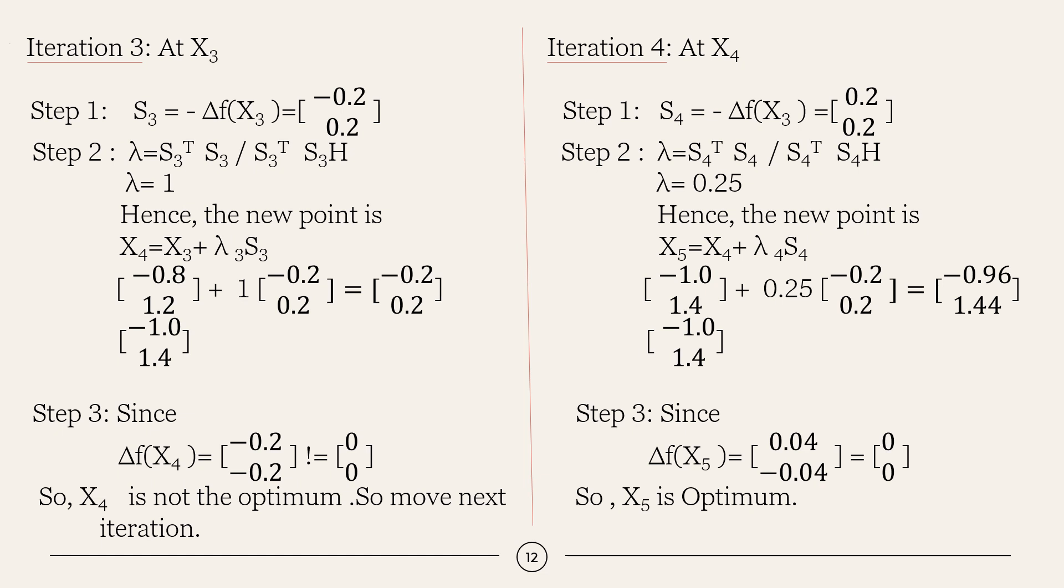In the iteration 3, we will be getting the next new point as minus 1 comma 1.4 which is also not optimum. So, we move on iterating. In the fourth iteration, we will get 0.04 comma minus 0.04 which is approximately equal to 0 comma 0. So, x5 is optimum. If you are not satisfied with the given value, then you can further optimize and find the value and so on.